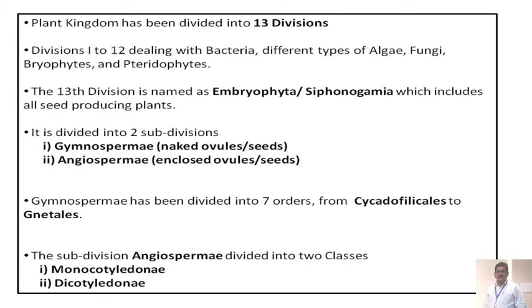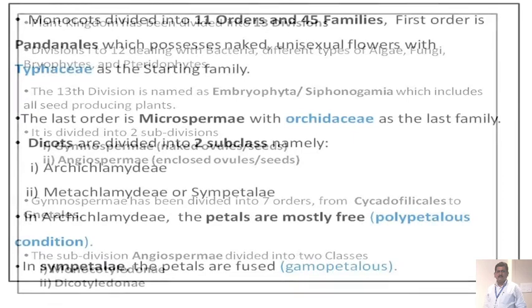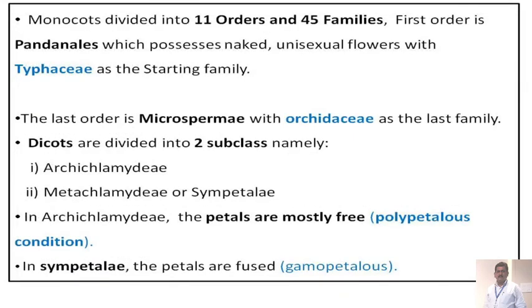The subdivision Angiospermia is divided into two classes: the Monocotyledons and Dicotyledons. Monocotyledons are divided into 11 orders and 45 families. The first order is Pandanales, which possesses naked, unisexual flowers with Typhaceae as the starting family. The last order is Microspermia with Orchidaceae as the last family. Dicotyledons are divided into two subclasses: Archichlamydeae and Metachlamydeae. In Archichlamydeae, the petals are mostly free — a polypetalous condition. In Metachlamydeae (also called Sympetalae), the petals are fused and a gamopetalous condition is observed.